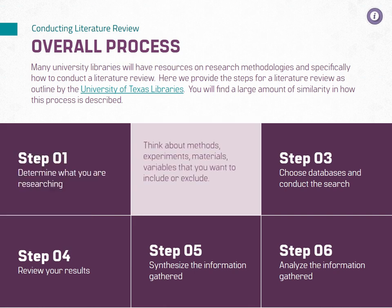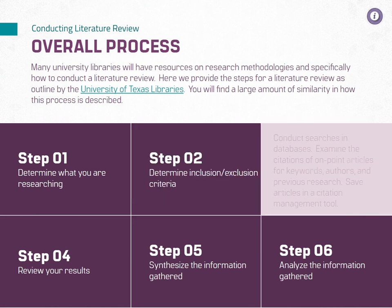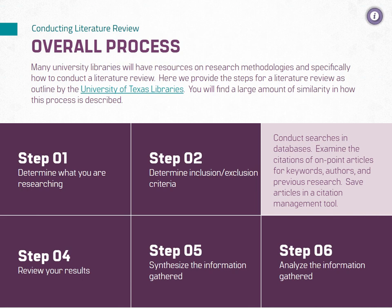Step two suggests that you determine your inclusion and exclusion criteria — what will your search criteria be, and what will you remove from search results as irrelevant? Next, select the databases you will search in and start generating results. If you aren't sure which databases to search in, you can speak to your university librarian or advisor. Some of the common databases to search are Google Scholar, ScienceDirect, and Taylor & Francis. However, depending on your area of research, there may be more appropriate databases to search.